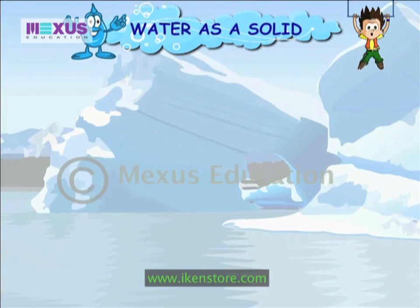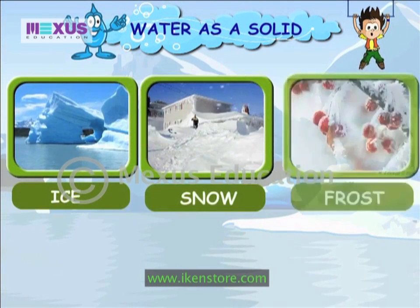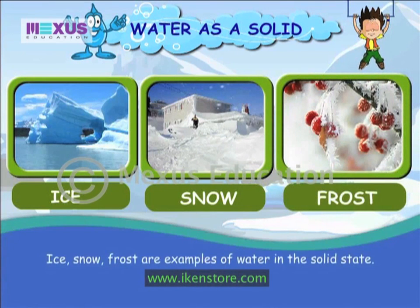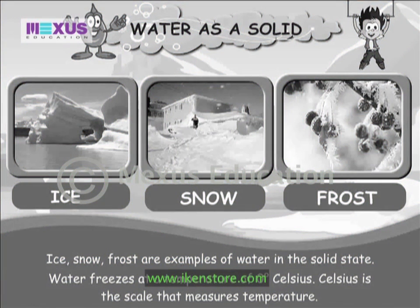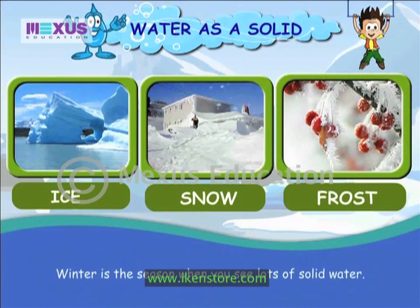Water as a solid. Ice, snow, and frost are all examples of water in the solid state. Water freezes at a temperature of 0 degrees Celsius. Celsius is the scale that measures temperature. Winter is the season when you see lots of solid water.